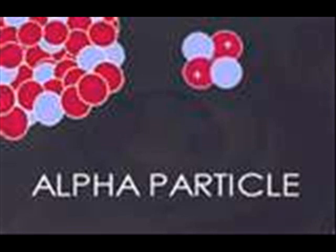Alpha decay is a type of radioactive decay in which an atomic nucleus emits an alpha particle — two protons and two neutrons bound together into a particle identical to a helium nucleus — and transforms or decays into an atom with a mass number four less and atomic number two less.